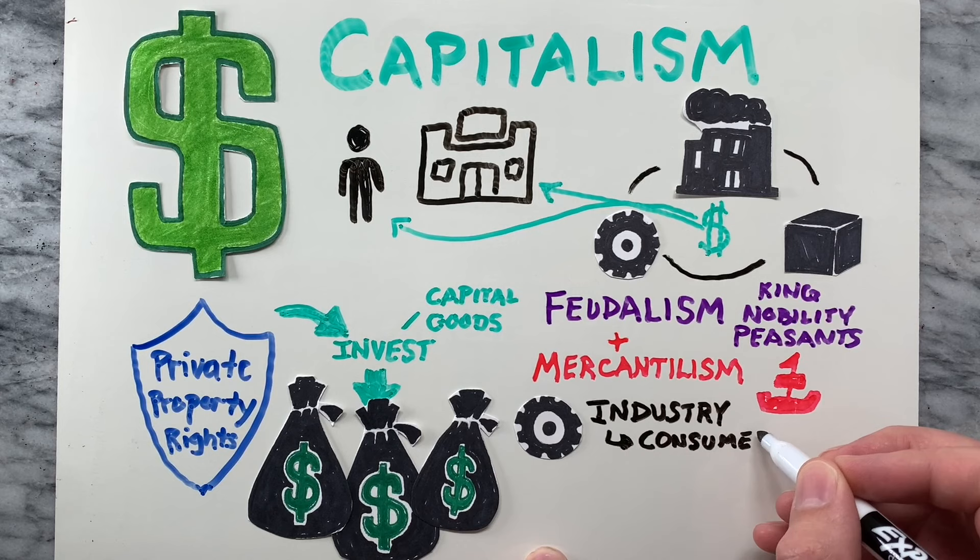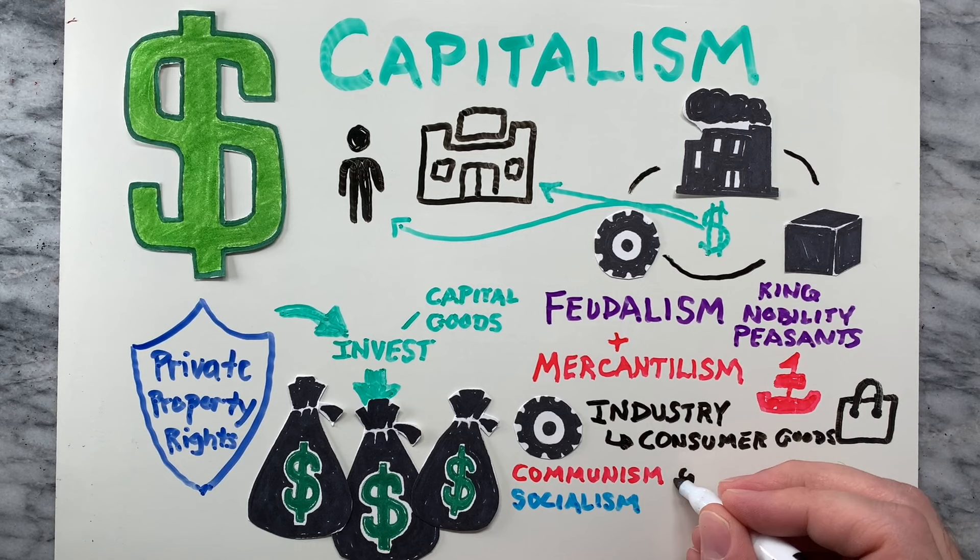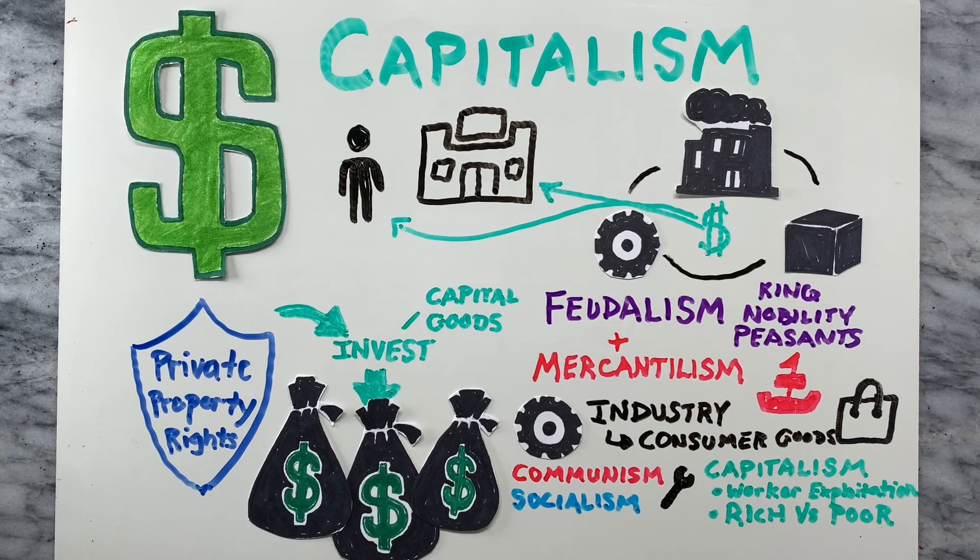Communism and socialism aim to right the wrongs of capitalism's free market system. These include worker exploitation and inequalities between rich and poor.